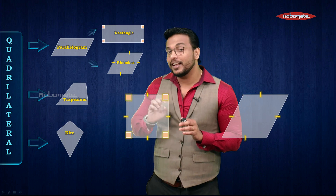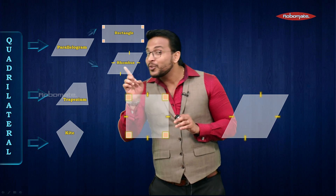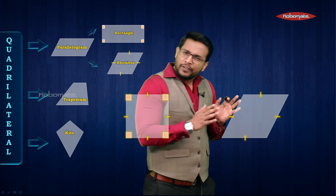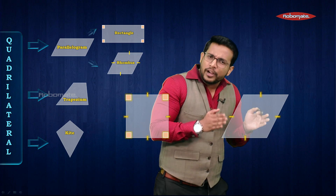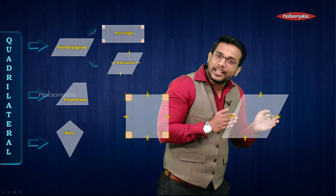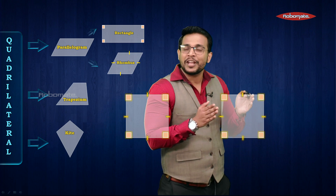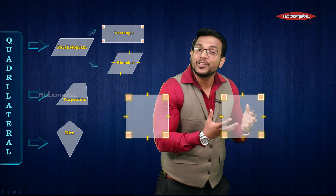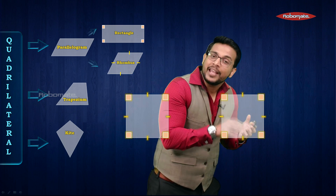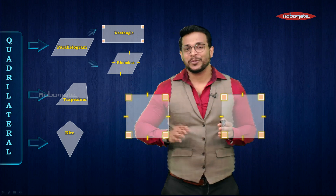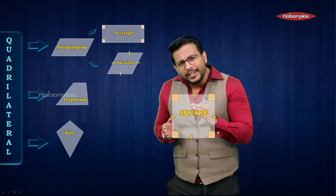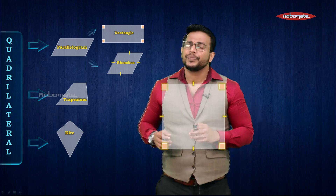Every square is a rectangle, and every square is also a parallelogram. Now focus on the rhombus — all sides are already equal. I'm going to modify this rhombus so that each angle becomes 90 degrees. This again becomes a square. So every square is a rhombus and every square is a parallelogram.